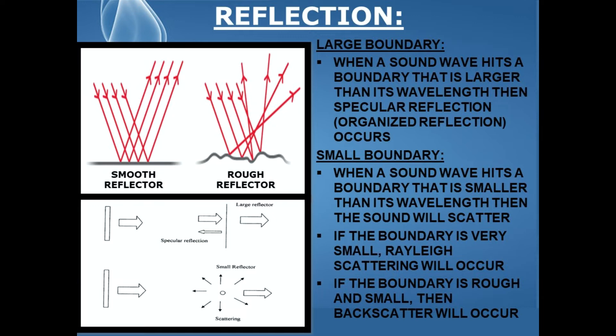If the boundary is very small, Rayleigh scattering will occur. Rayleigh scattering is an organized type of scattering where the sound is uniformly scattered in all directions — omni-directional. And if the boundary is rough and small, then backscatter will occur. Backscatter is a disorganized type of scattering in which the sound is scattered in a disorganized pattern, reflecting in multiple directions.